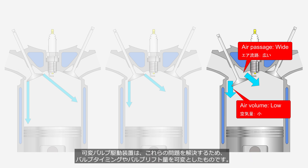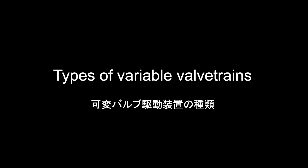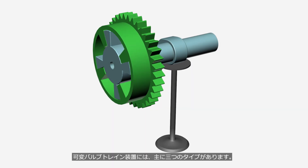Variable valvetrain systems solve these issues by allowing adjustment of valve timing and lift amounts. There are mainly three types of variable valvetrain systems.